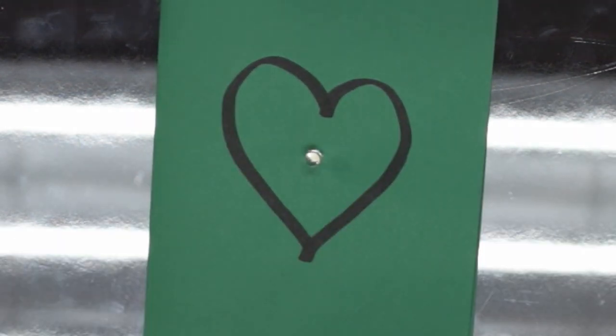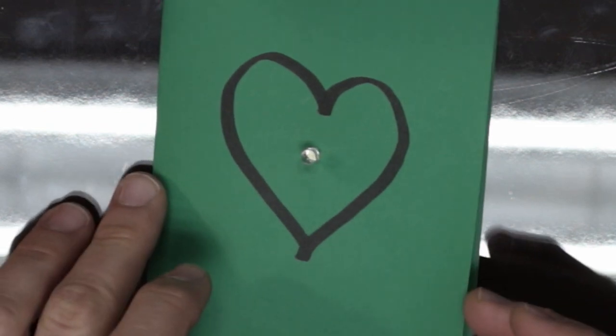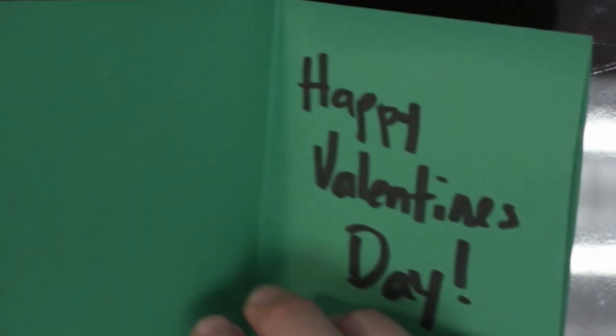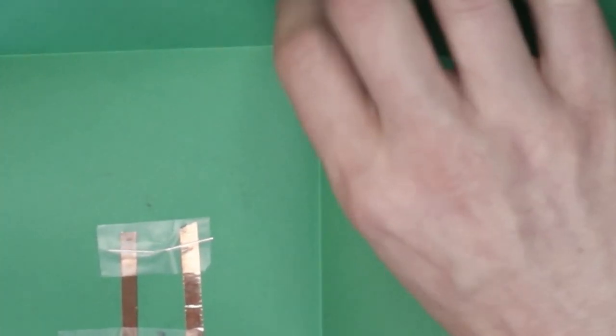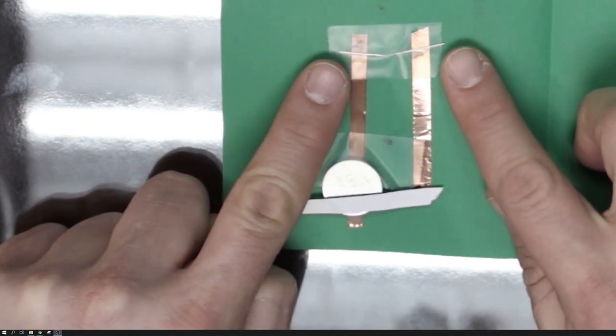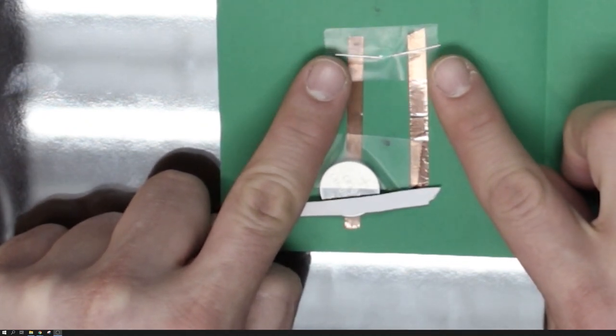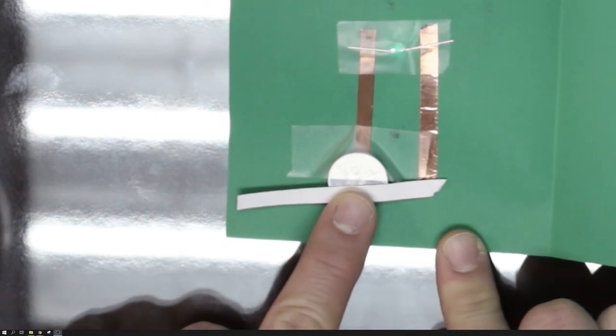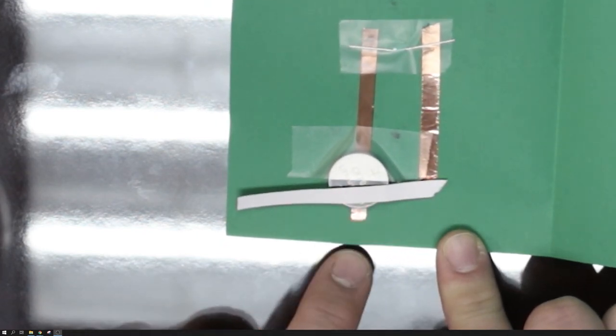Here's some troubleshooting tips. If your LED does not light up, the first thing you need to check is do you have a complete circuit? Carefully unfold your card. Are the legs of your LED on top of the copper tape? Do both pieces of copper tape touch the battery?